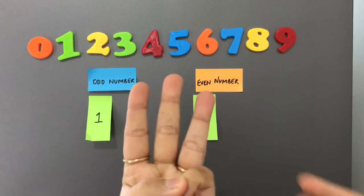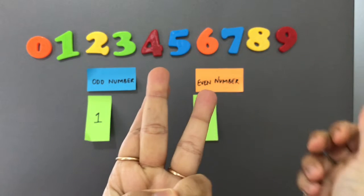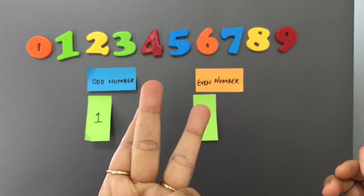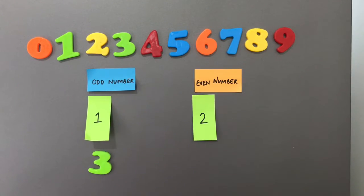Coming to number three. These two fingers form a pair and this is left alone, still looking for a friend. So our number three is an odd number.